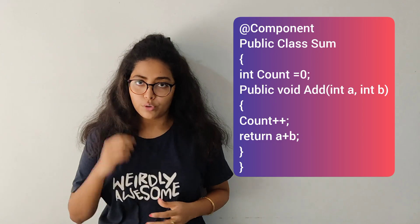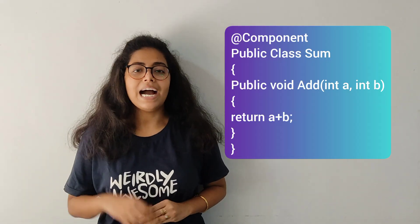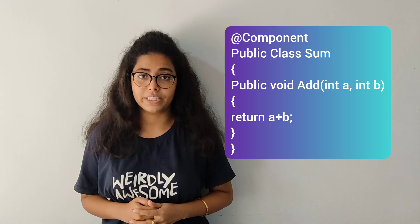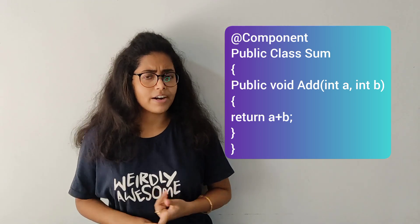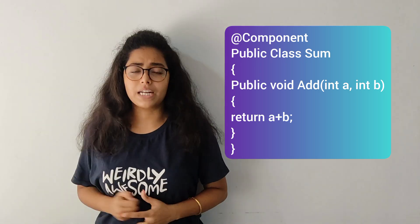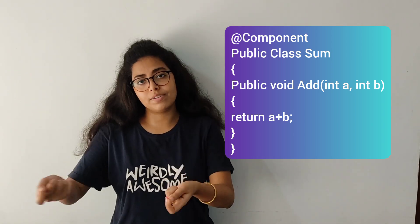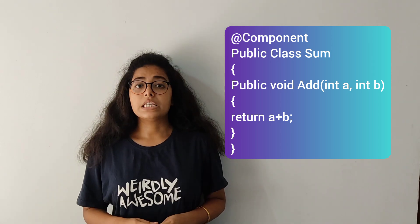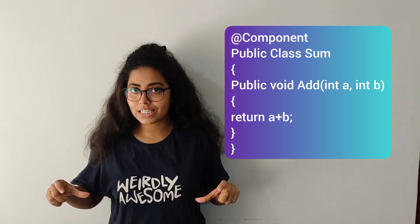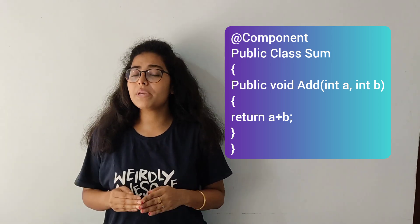That is why we have to make the singleton class stateless. Now let's look at this code snippet where I have removed that counter which was being incremented every time a thread accessed the singleton object. Now, no matter how many user request threads come and invoke this add method, they will be able to execute it safely and concurrently. Each request is an independent thread with its own execution context — its own stack — where method variables and method names are stored, and they won't overlap with each other.